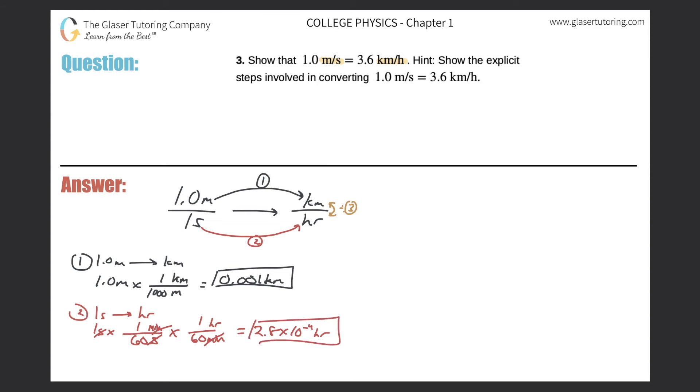Last but not least, step three: take your answer in part one, 0.001 kilometers, divide it by your answer from part two, 2.8 times 10 to the minus 4 hours, and see what comes out. Plug that into the calculator and we get 3.6 kilometers per hour. Who would have guessed? So it matches.